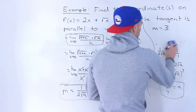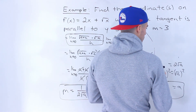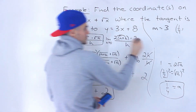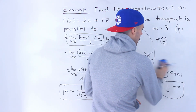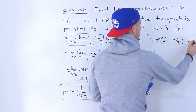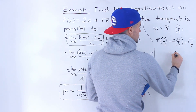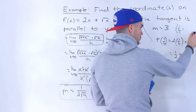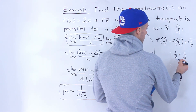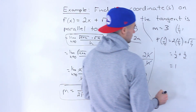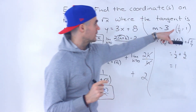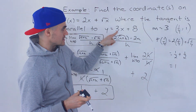But that's just the x value — we want the full coordinate. To get the y-coordinate, we plug 1 over 4 into the function: f of 1 over 4 equals 2 times 1 over 4 plus the square root of 1 over 4. That gives 1 over 2 plus 1 over 2, which equals 1. So the coordinate is (1/4, 1) — that's where the slope of the tangent on this function is parallel to the line, equaling 3.